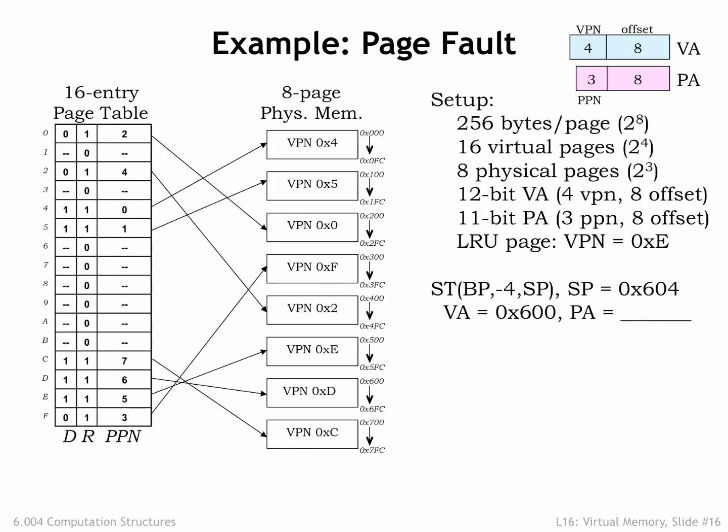To double-check our understanding of page faults, let's run through an example. Here's the same setup as in our previous example, but this time consider a store instruction making an access to virtual address hex 600, which is located on virtual page 6. Checking the page table entry for virtual page 6, we see that its R bit is 0, indicating that it is NOT resident in main memory, which causes a page fault exception. The page fault handler selects VPN E for replacement since it's the least recently used page.